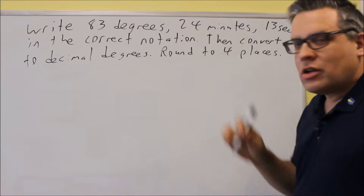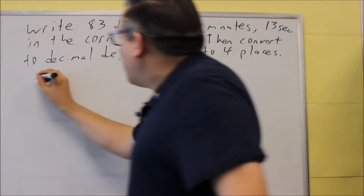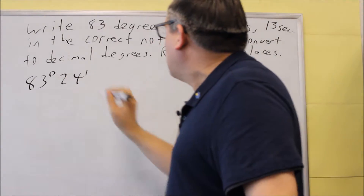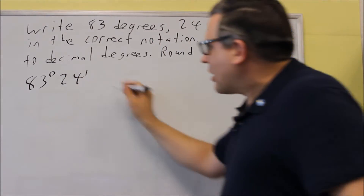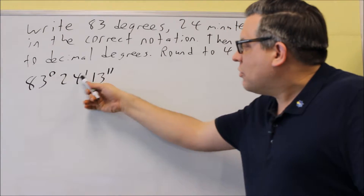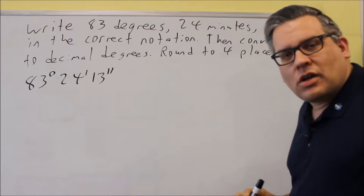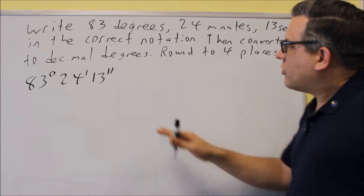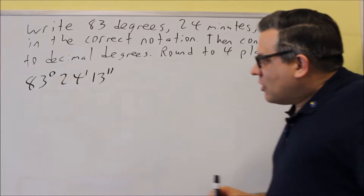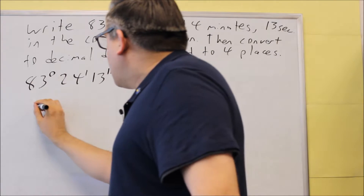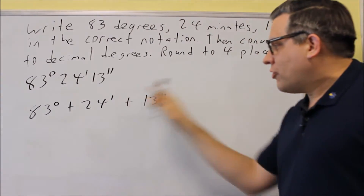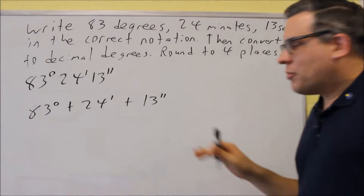First, let's write out the notation: 83 degrees, 24 minutes, and 13 seconds. That's the correct way to write it — always in that order: degrees, minutes, seconds. Next, to convert into decimal degrees, we'll separate it as 83 degrees plus 24 minutes plus 13 seconds, then use unit conversions to convert the minutes and seconds back into degrees.